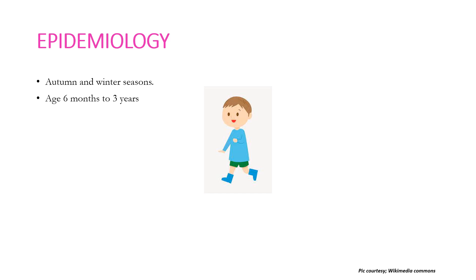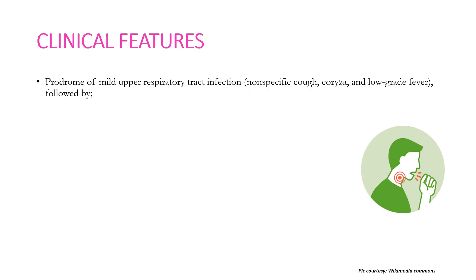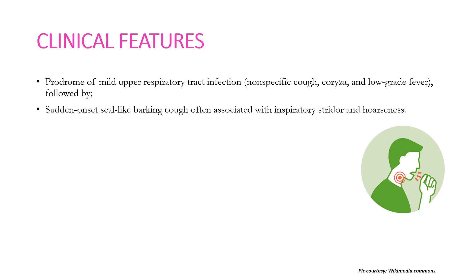Croup is generally seen in autumn and winter seasons. The most common age group involved is 6 months to 3 years, and the male gender is most commonly affected. There is a prodrome of mild upper respiratory tract infection including non-specific cough, coryza, and low-grade fever, followed by sudden onset seal-like barking cough, often associated with inspiratory stridor and hoarseness. A mild wheeze may be present, indicating lower airway involvement.